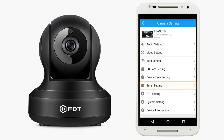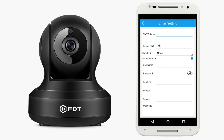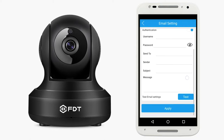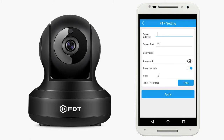Email Setting: here you can input your email information to forward email alerts. Please tap on the test button to ensure your email information is correct. FTP Setting: here you can input your FTP account information to forward videos and alerts to the FTP server. Again, please tap the test button to ensure your FTP account information is correct.